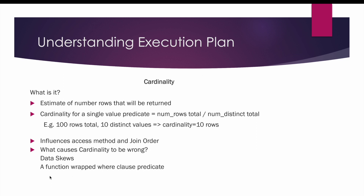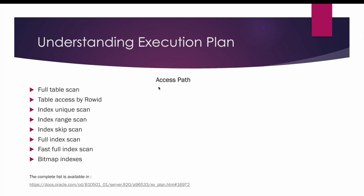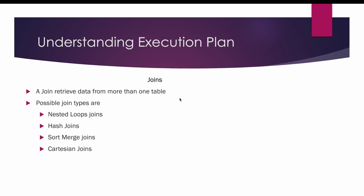Another cause of incorrect cardinality estimation is when a function is wrapped in the WHERE clause predicate. In the execution plan you can encounter different access paths such as full table scan, table access by row ID, index unique scan, index range scan, index skip scan, and others. You can refer to the linked resource for the complete list. Similarly, you can see different join types in the execution plan: nested loop join, hash join, sort merge join, and cartesian join. Joins are used to retrieve data from more than one table.